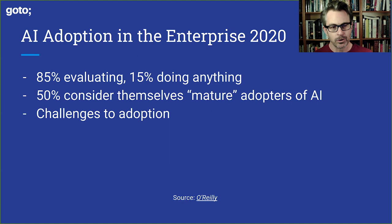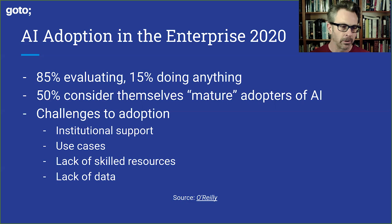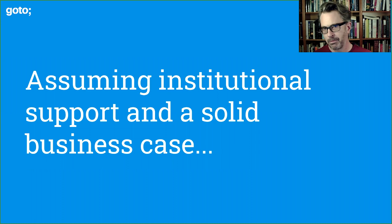They listed challenges to adoption as the following — I've listed the top four, which comprise the lion's share of challenges: institutional support, use cases (finding a valid, ROI-driven use case for machine learning), lack of skilled resources, and lack of data. These are very common barriers to the adoption of machine learning in an organization. But my presentation here is not about those things — it's about the things that follow.